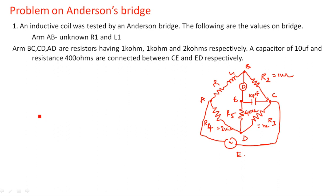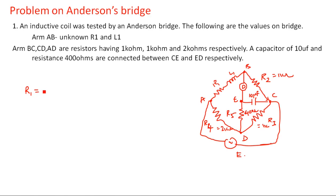Whatever nodes are given, you can take them in either anti-clockwise or clockwise direction, then represent as per the circuit diagram to get the original circuit. Once you are able to draw the circuit diagram, everything becomes easy. So what are the formulas for L1 and R1?